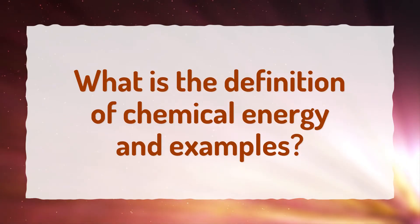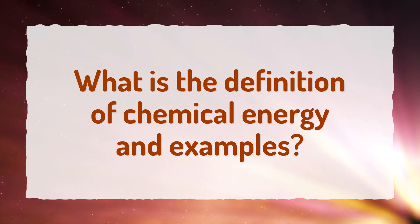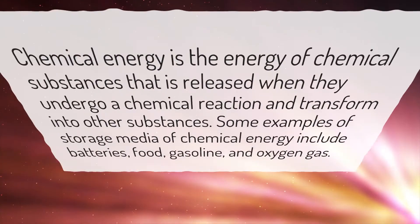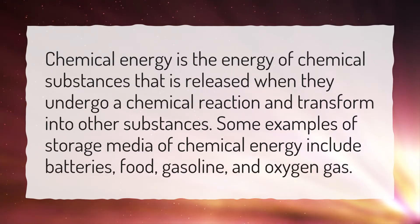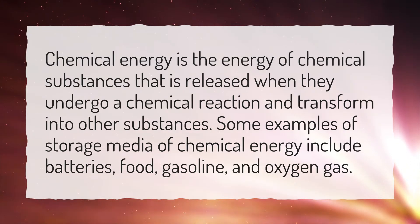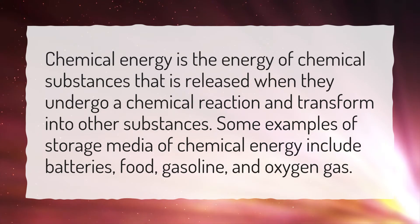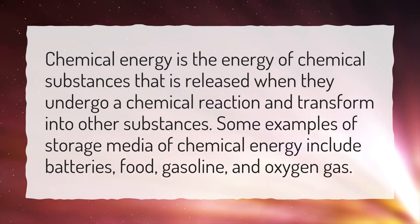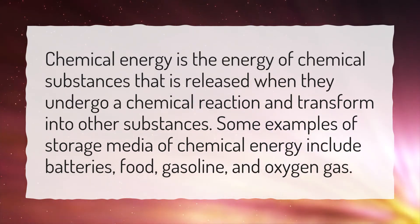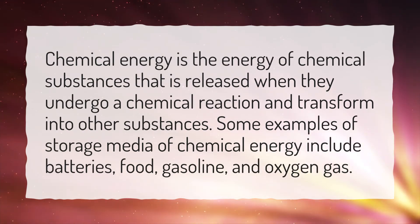What is the definition of chemical energy with examples? Chemical energy is the energy of chemical substances that is released when they undergo a chemical reaction and transform into other substances. Some examples of storage media of chemical energy include batteries, food, gasoline, and oxygen gas.